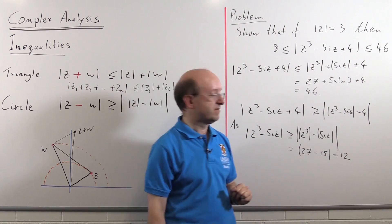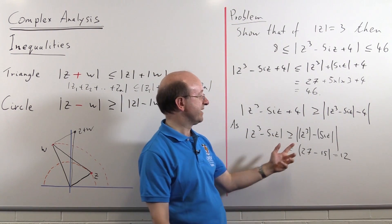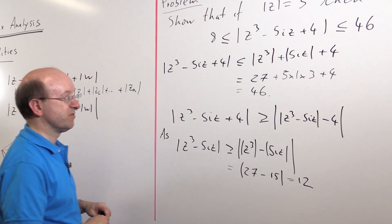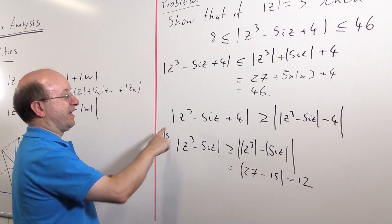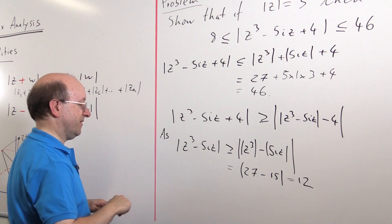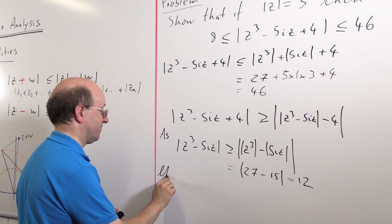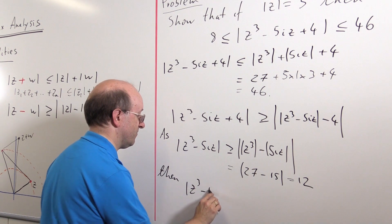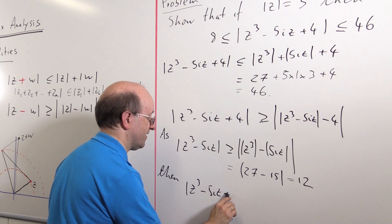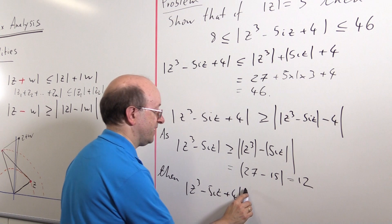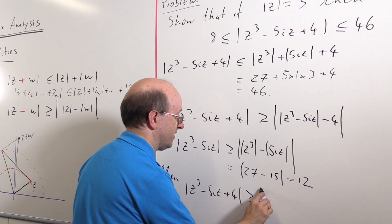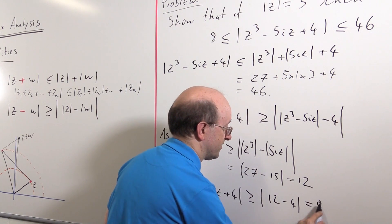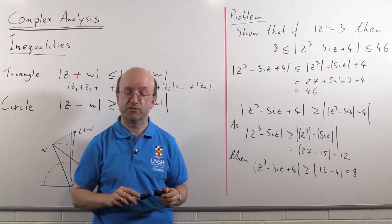So we've got this term here is bigger than or equal to 12. We're just going to subtract 4 off and that's going to give us what we want. So, we have this term. As that is true, then the thing we're interested in, z cubed minus 5i z plus 4 is bigger than or equal to the absolute value of 12 minus 4, which is the 8 that we were asked to prove.